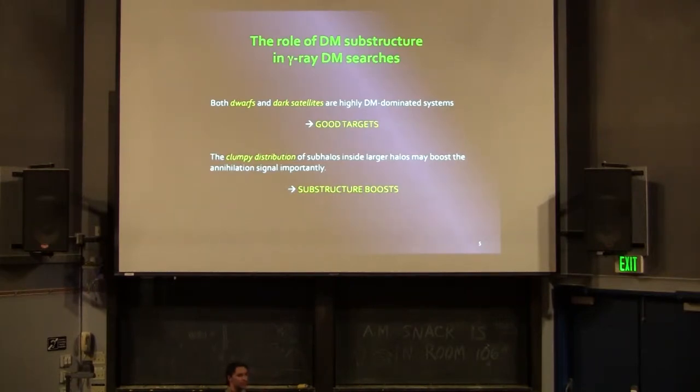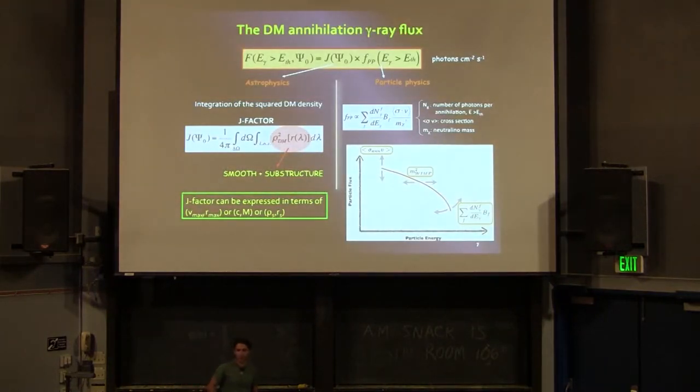And on the other hand, this clumpy distribution of subhalos inside larger halos may actually boost the dark matter annihilation signal that we expect in our gamma-ray telescopes. So in this talk I will focus on this second possibility, this so-called substructure boosts. We are now working also inside the Fermi collaboration in the first topic, but I won't talk about it today.